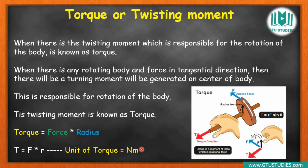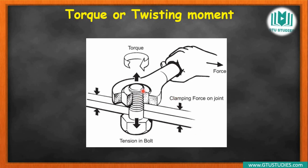Moment's unit is also Newton-meter, and torque's unit is also Newton-meter — this is exactly where the main confusion arises. That is why we need to see the difference. A practical application of torque: when fitting a nut and bolt, you hold the spanner at some distance and apply force. If you hold it close to the bolt with no distance, the force becomes ineffective — no torque is generated. As you increase the radius (distance), torque increases. So: torque = force × radius — increasing radius increases torque.